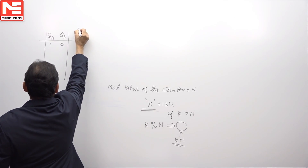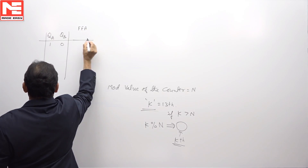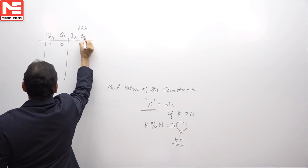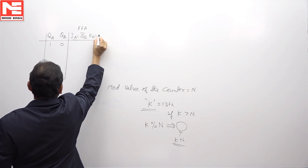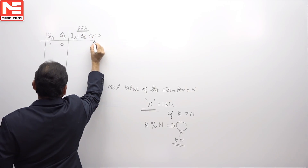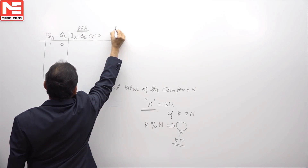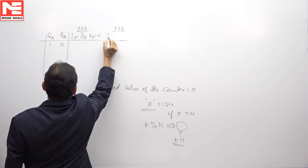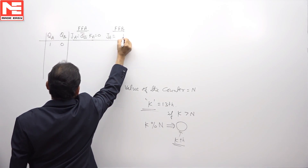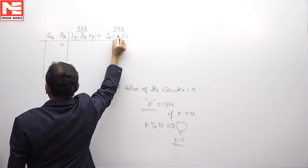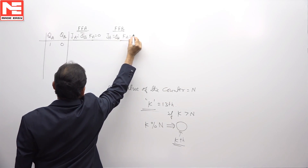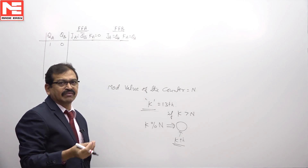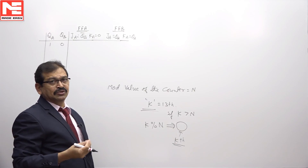Looking at the flip-flop A inputs: JA is QB complement and KA is 0. For flip-flop B inputs, JB as well as KB are both connected to QA. These are the connections for flip-flop A and flip-flop B respectively.